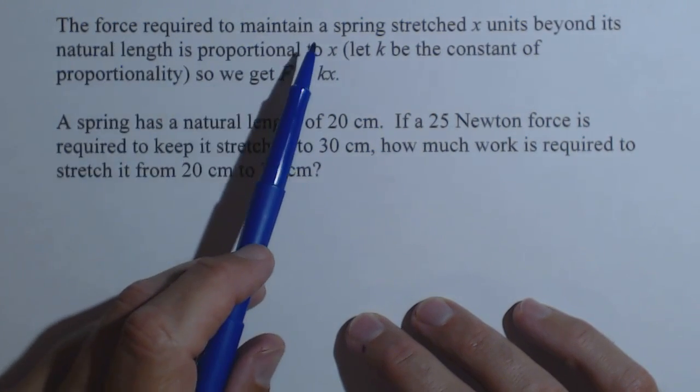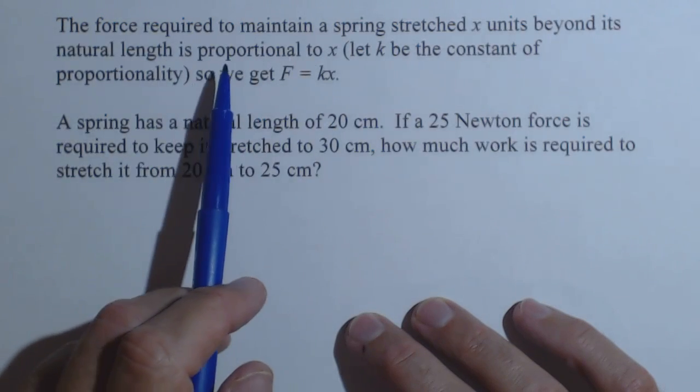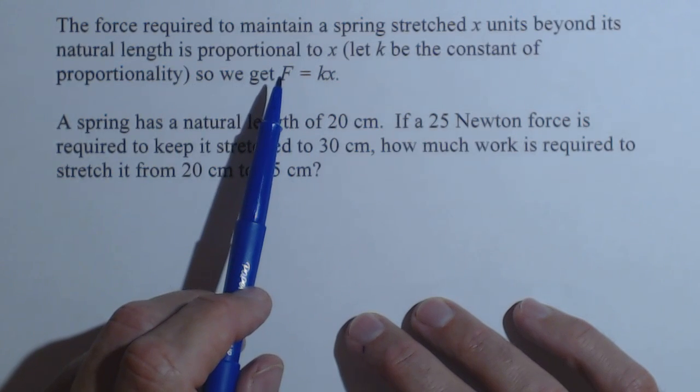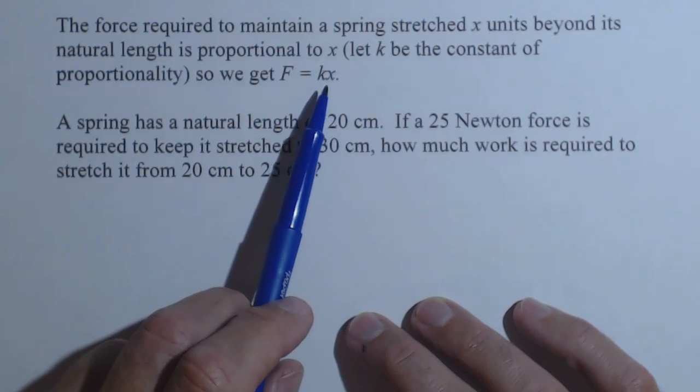Hooke's law says the force required to maintain a spring stretched x units beyond its natural length is proportional to x. So using k as the constant of proportionality, we get F = kx.